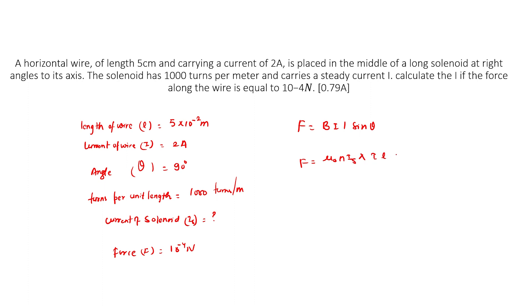Substituting values: F = IL sin theta. So 10 to the power minus 4 equals 4π × 10⁻⁷ × 1000 × Is × 2 × 1 × sin 90°.